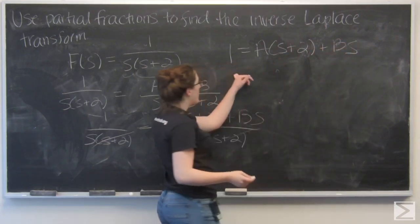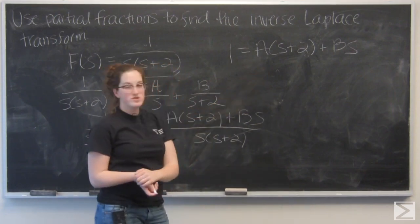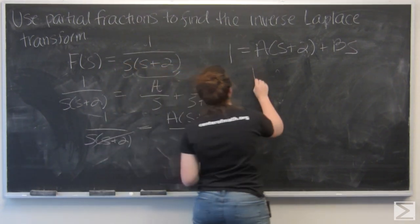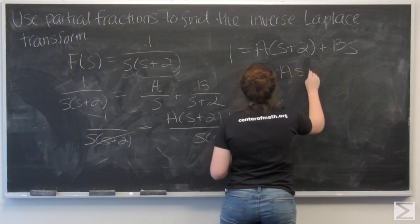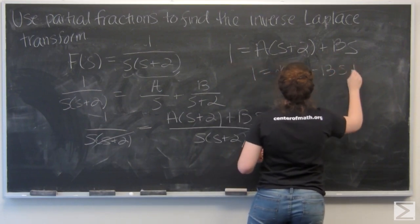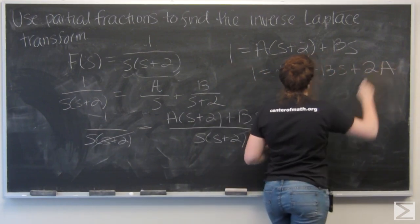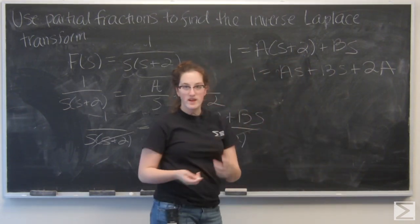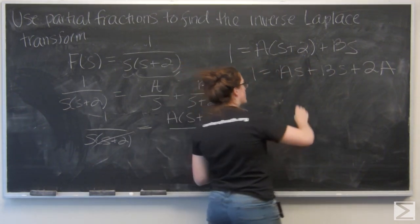And say that 1 equals a quantity s plus 2 plus b s. Go ahead and distribute the a. I essentially have two terms here, one with s and one with just a constant.